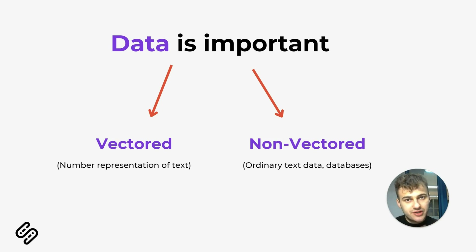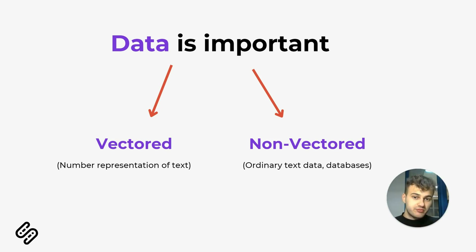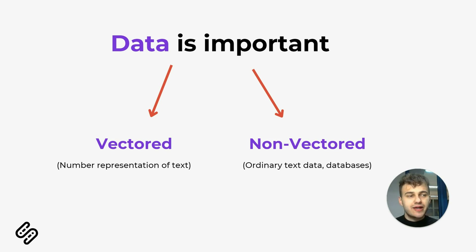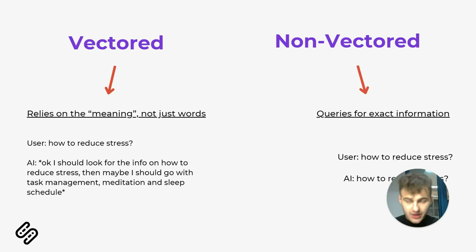For practical use, remember that not all data is created and managed equally, because you have two types. The first is vectored data, and you also have non-vector data. When data is vectored, it means it is represented by numbers — you have text, but it's represented numerically. This makes AI faster and better at understanding the meaning behind your words and text.